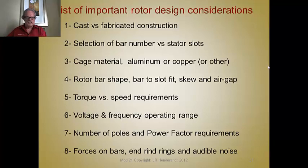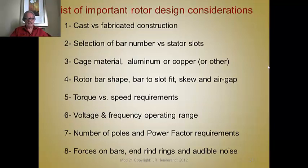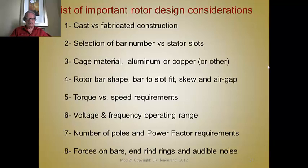Let's start with a summary of the major design considerations. We have to decide first whether we're going to cast this rotor or fabricate it. We have to select a number of bars and rotor slots versus a number of stator slots. We have to select a cage material — aluminum or copper — and then most importantly the bar shape itself and its location, the slot fit, whether it's skewed or not, and of course the air gap between the rotor and the stator.